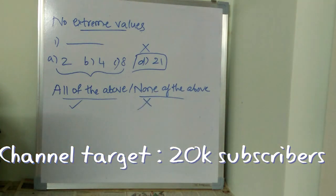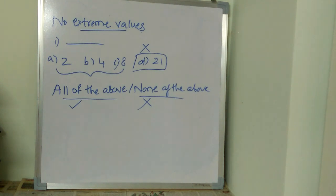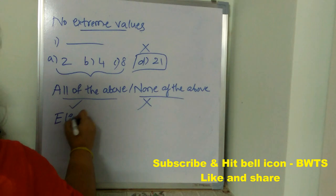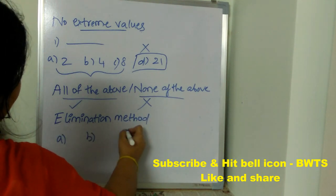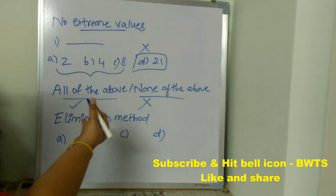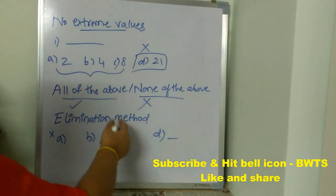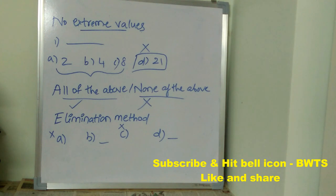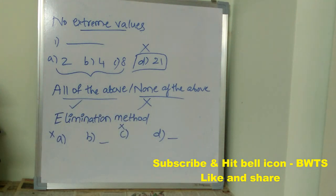The next cheat code is the 'Elimination Method.' When you have four options, using your logic and the concept related to the question, try to eliminate the irrelevant options. After eliminating irrelevant options, you will be left with only two options, and then you can happily guess and put one of those options as the answer.